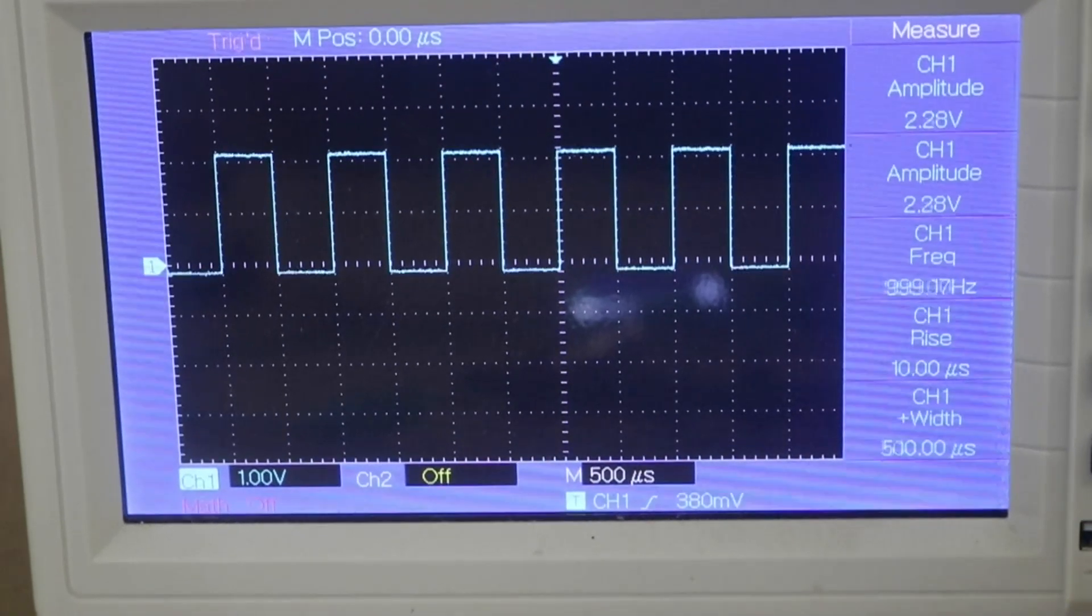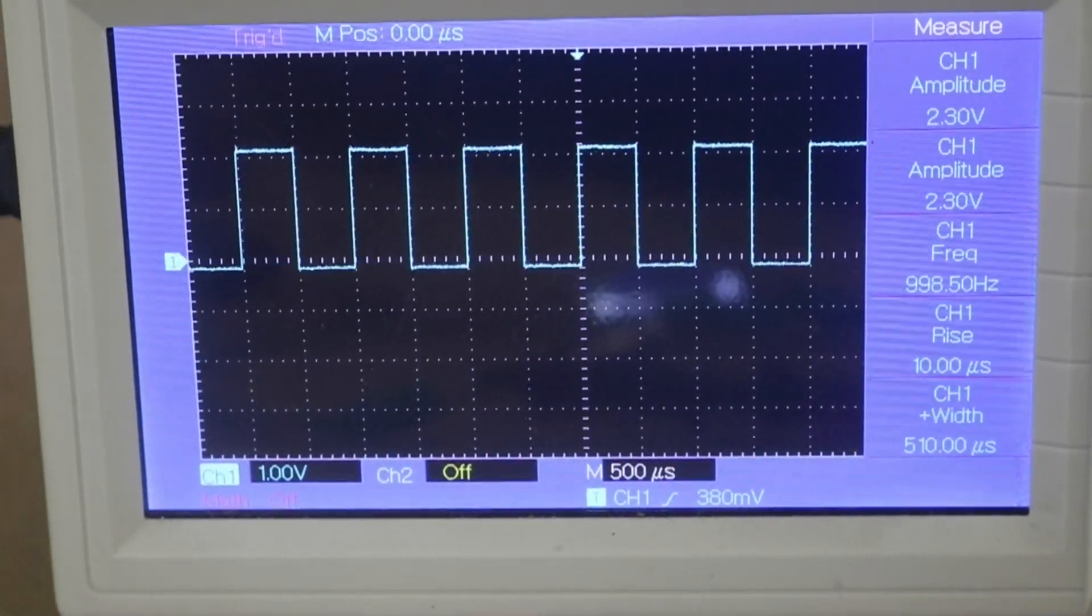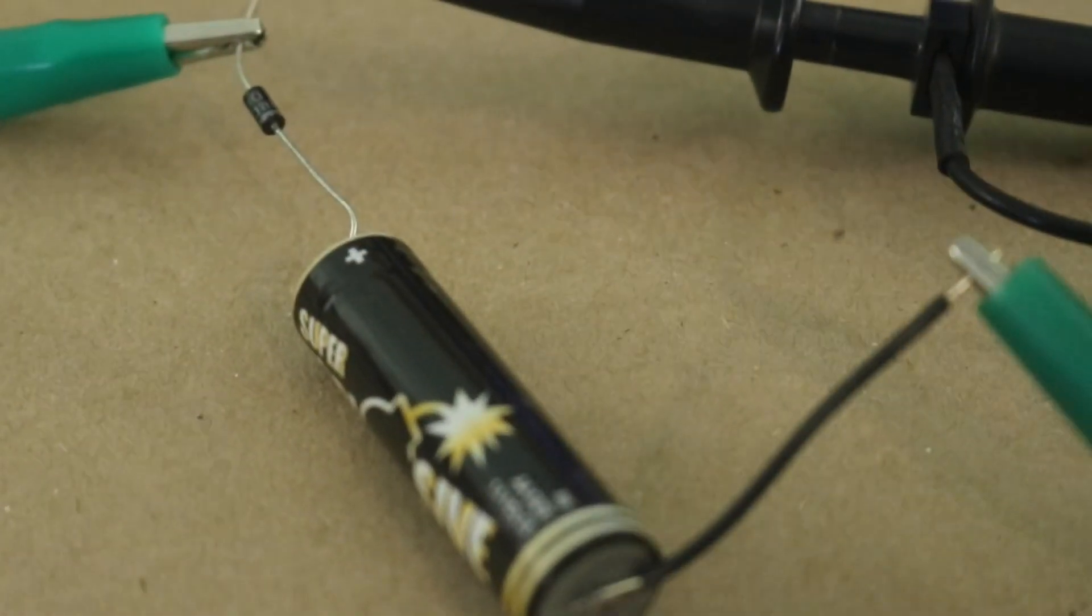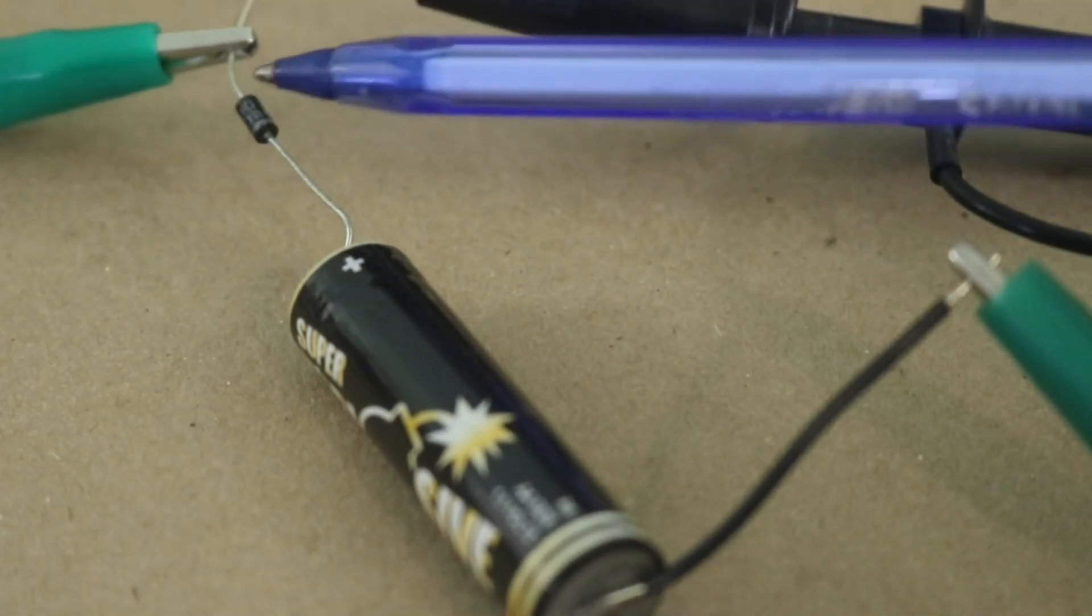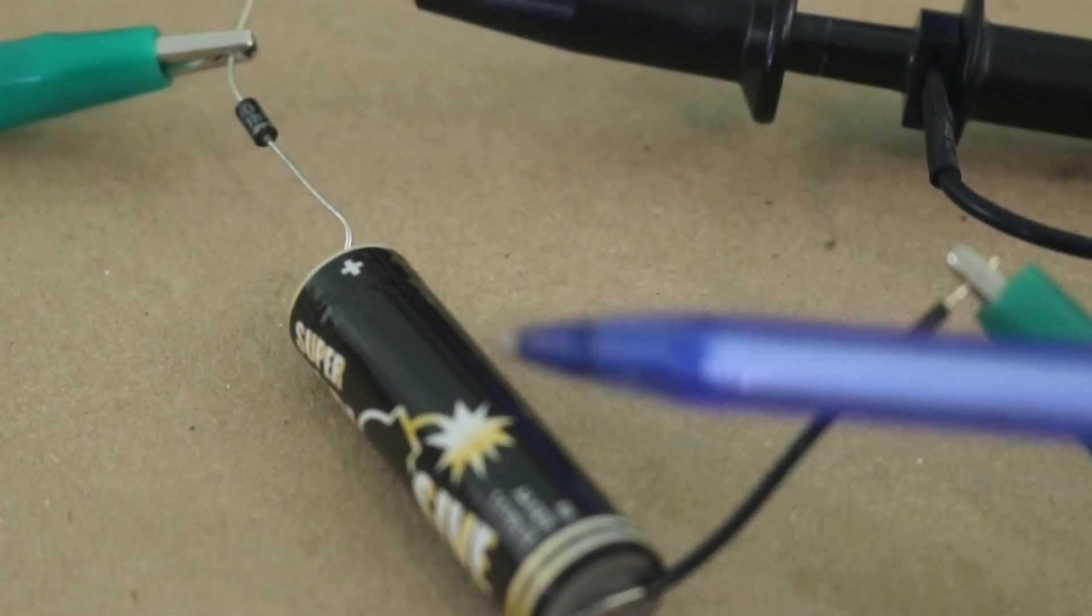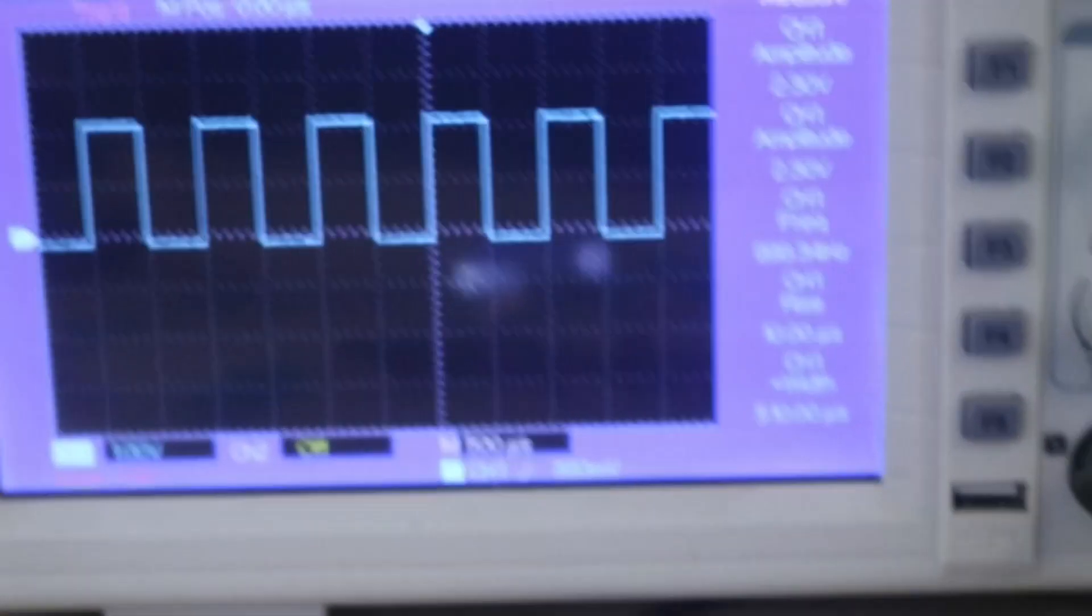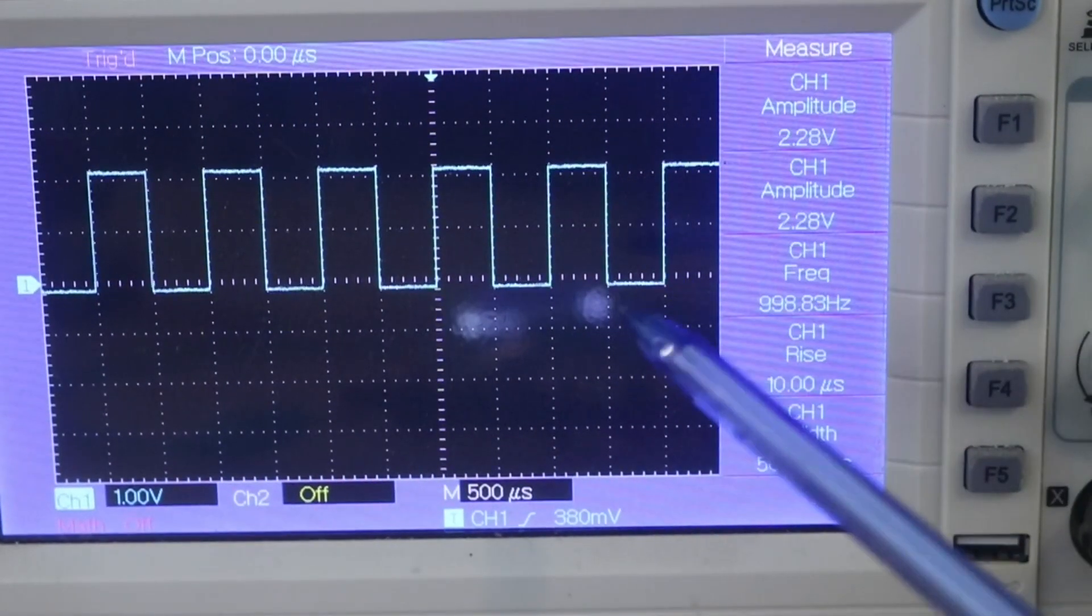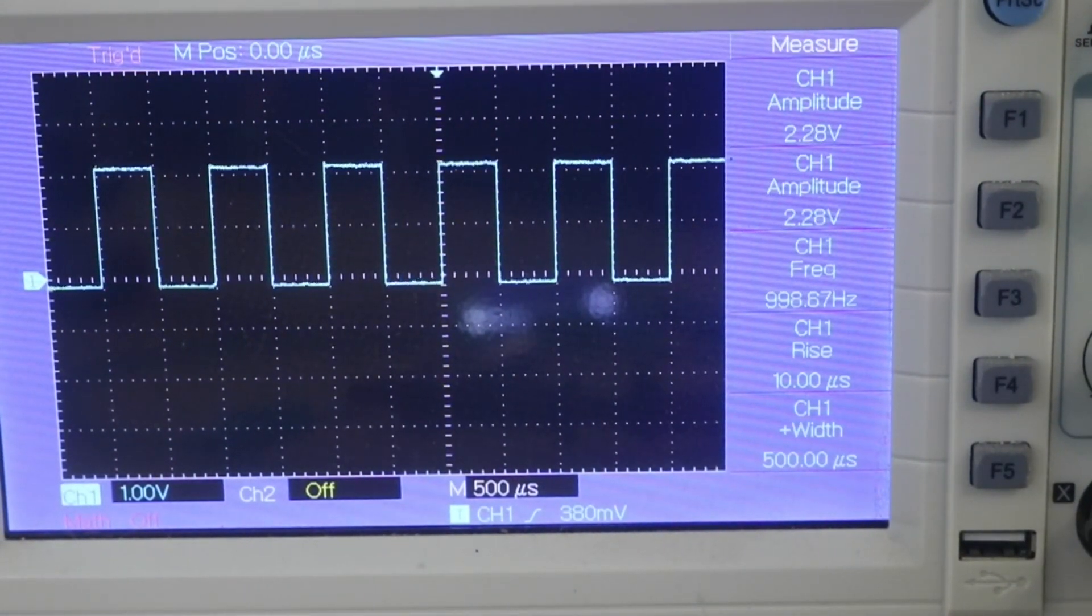You can also change the maximum clipping voltage if, for example, you put a battery in series with the diode. So here we will have the 0.7 volts of the diode plus around 1.5 volts of the battery. So here we can see that we have around 2.2 volts maximum clipping voltage.